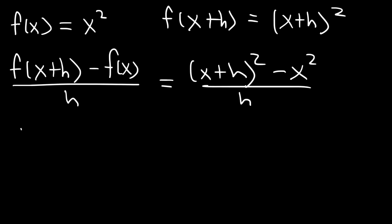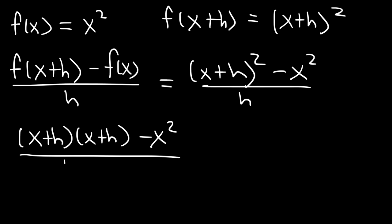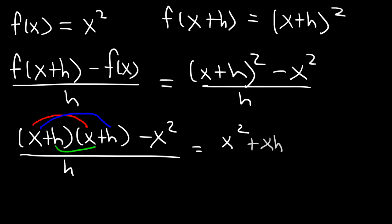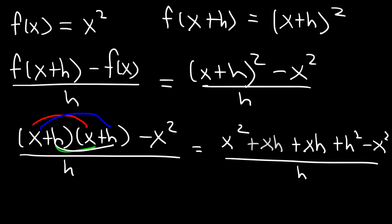Now x plus h squared is the same as x plus h times another x plus h, so we need to FOIL. Multiplying x by x gives x squared. Then x times h is xh. Then h times x is another xh. And h times h is h squared. Then we have negative x squared from f of x. So x squared plus negative x squared adds up to zero, and xh plus xh gives 2xh, plus h squared.